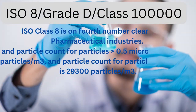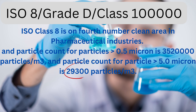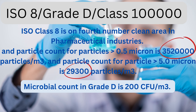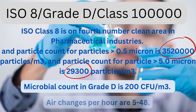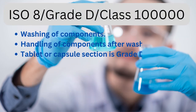Fourth is Grade D, corresponding to ISO 8 or Class 100,000. ISO class 8 is the fourth clean area in pharmaceutical industries. Particle count for particles greater than 0.5 micron is 3,520,000 particles per cubic meter, and particle count for particles greater than 5.0 micron is 29,300 particles per cubic meter. Microbial count in Grade D is 200 CFU per cubic meter. Air changes per hour are 5 to 48. Grade D is used for: washing of components, handling of components after washing, and tablet or capsule section is Grade D at rest.